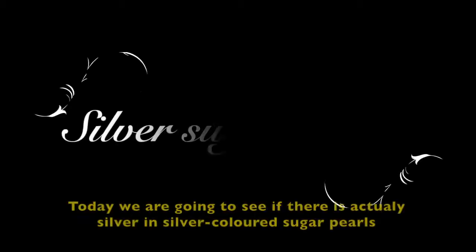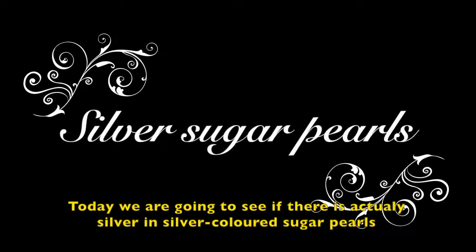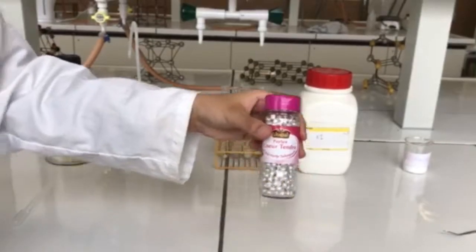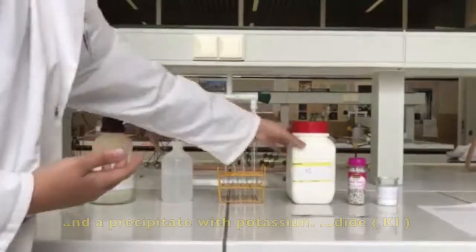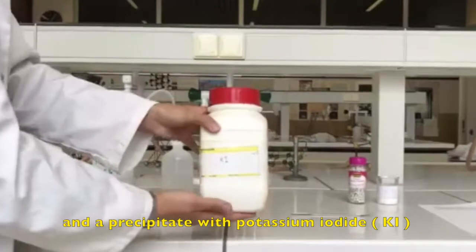Hello everyone, today we are going to see if there is actual silver in silver-colored sugar pearls. We are going to prove this with a precipitate of sodium chloride and a precipitate with potassium iodide.